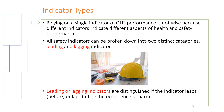Relying on a single indicator is not wise because different indicators indicate different aspects of health and safety performance. All safety indicators can be broken down into two distinct categories: leading indicators and lagging indicators. They are distinguished by whether the indicator leads before or lags after the occurrence of harm.